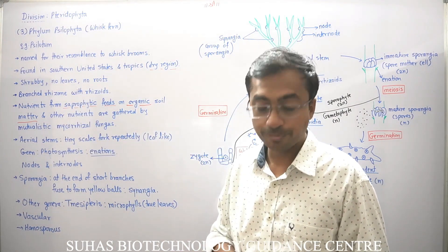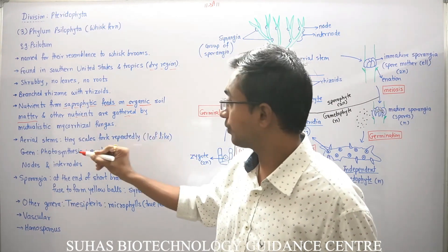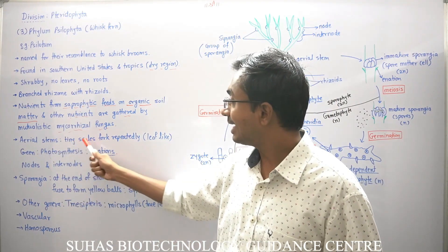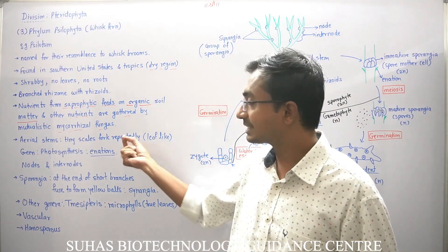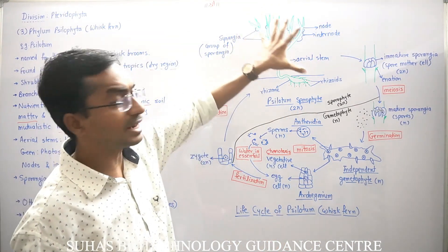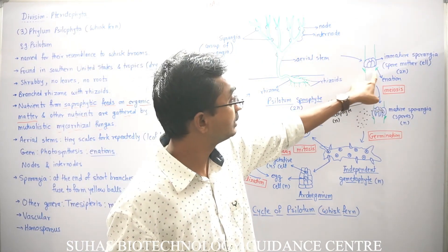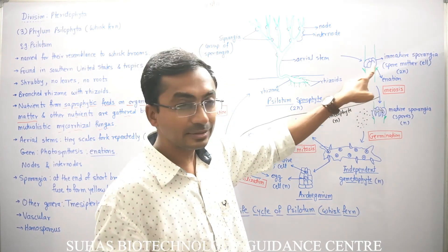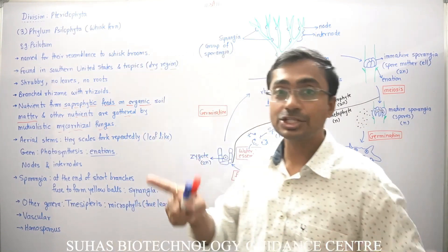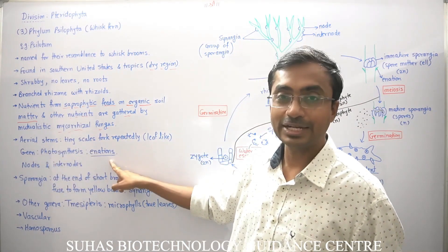This is a very important point because this is not common with other plants. The mycorrhizal fungus in pteridophytes is extremely sensitive. Aerial stems have tiny scale-like structures. Some scale-like leaves are there which are very small and tiny. When you enlarge a part of it, you can see just below the sporangia these structures. They are scale-like, very small, tiny, and green because they are photosynthetic. They are called enations. Many enations are present but because of their tiny nature, we can't see them easily — they are leaf-like, green, and photosynthetic.